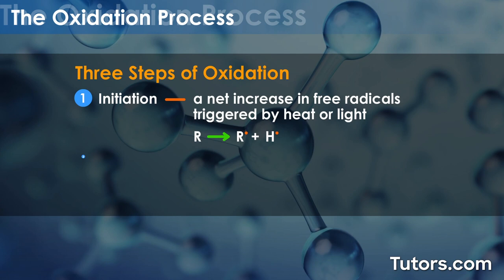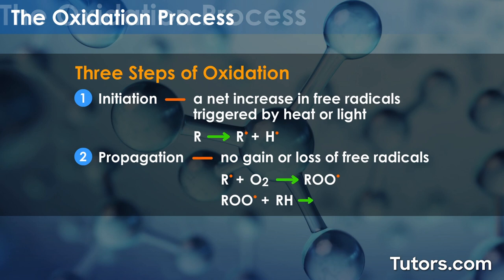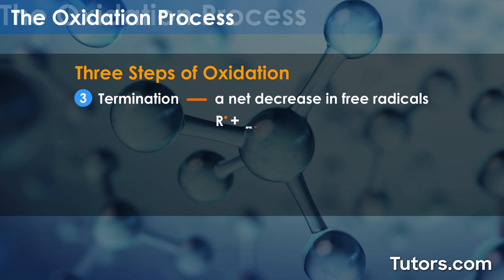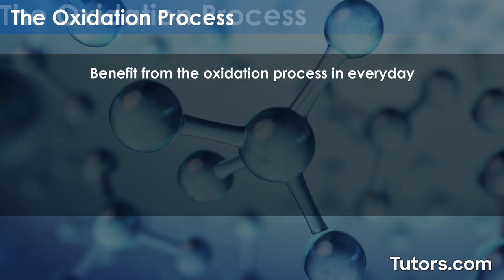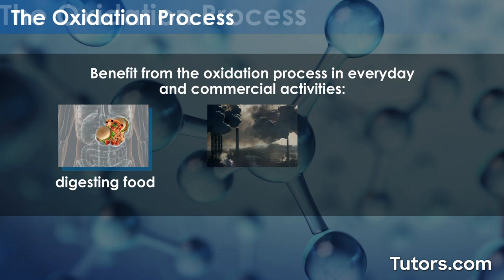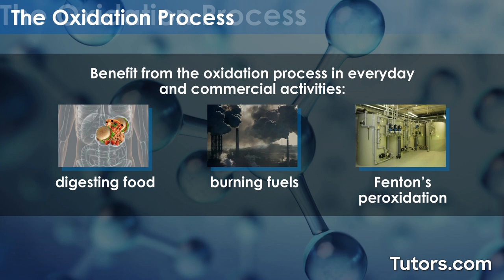Step 2: Propagation — no gain or loss of free radicals. Step 3: Termination — a net decrease in free radicals. You see and benefit from oxidation processes in everyday and commercial activities like digesting food, burning fuel, and Fenton's pre-oxidation, used to treat wastewater.